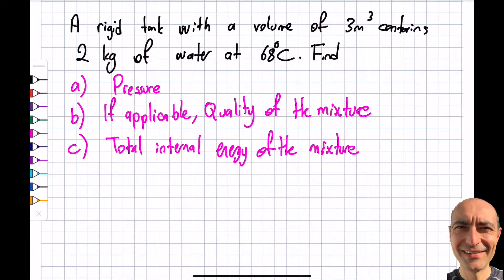Okay, let's go ahead and solve this question too. A rigid tank with a volume of 3 m³ contains exactly the same as the previous segment that I solved. But this time around, I give you the kilograms, how much the mass of the water, and I give you the temperature of it.